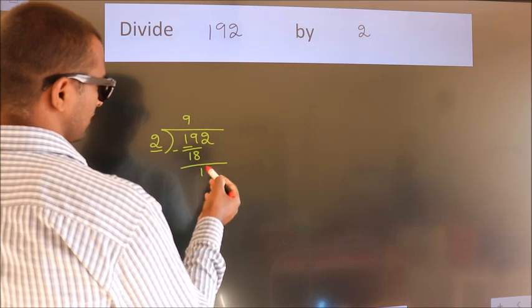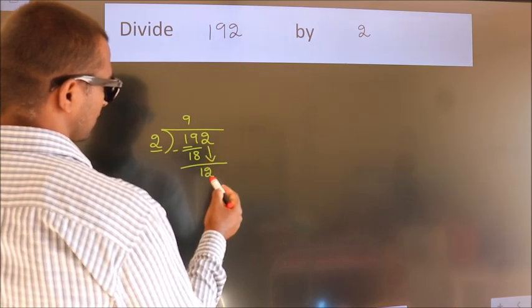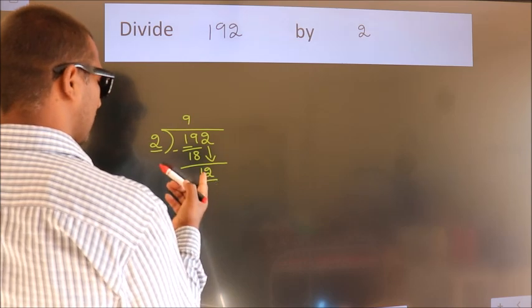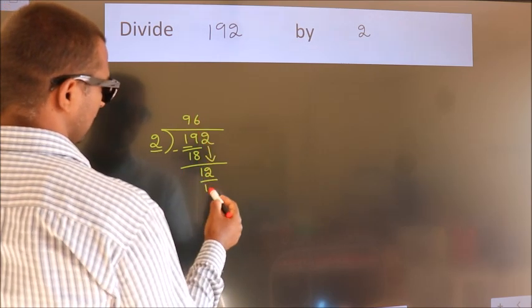After this, bring down the beside number. So 2 down. So 12. When do we get 12? In 2 table. 2 times 6, 12.